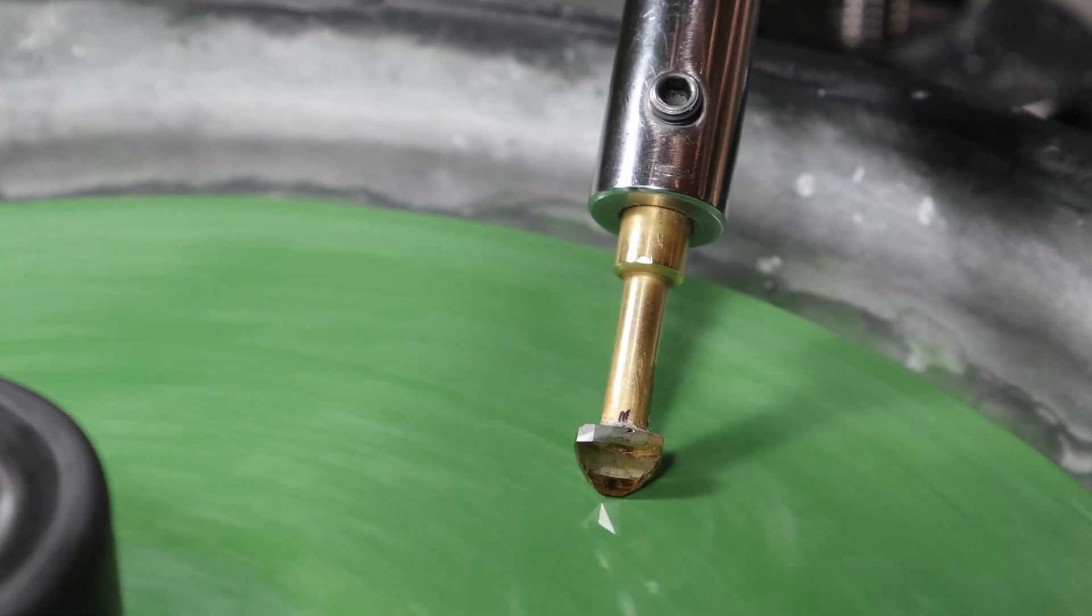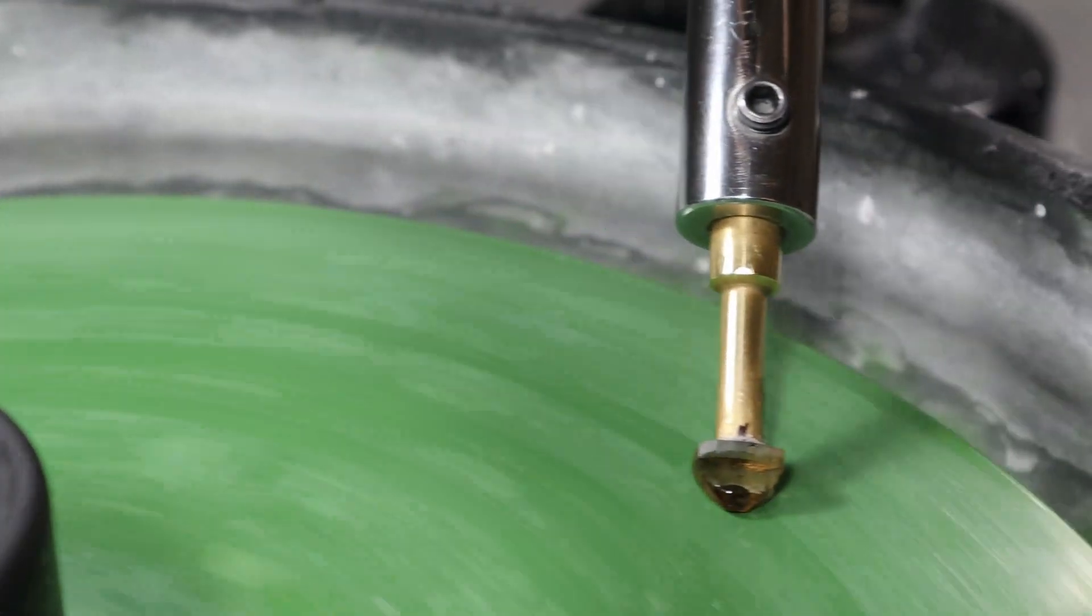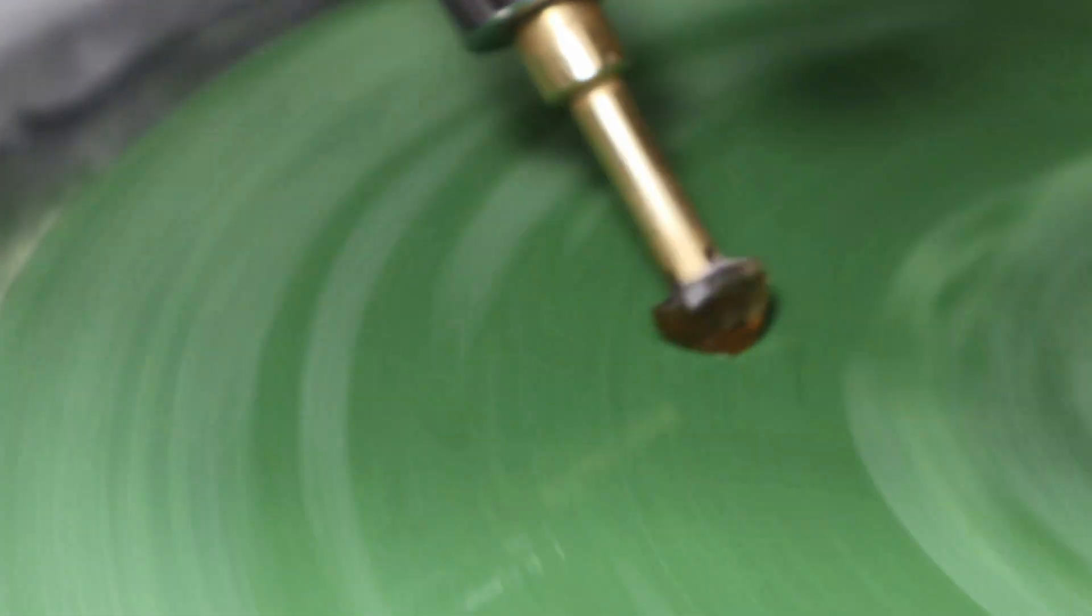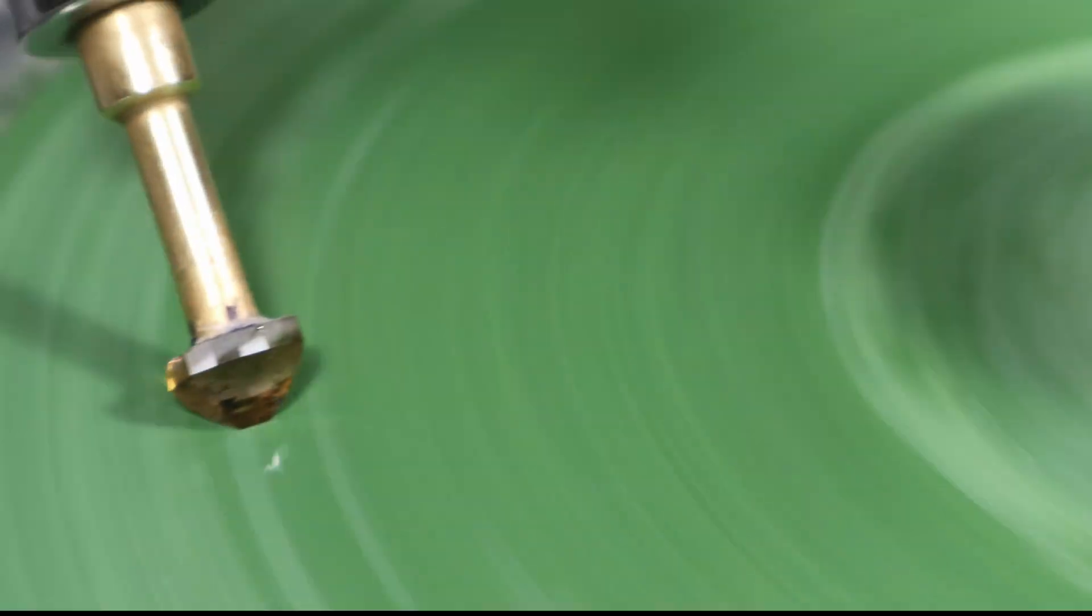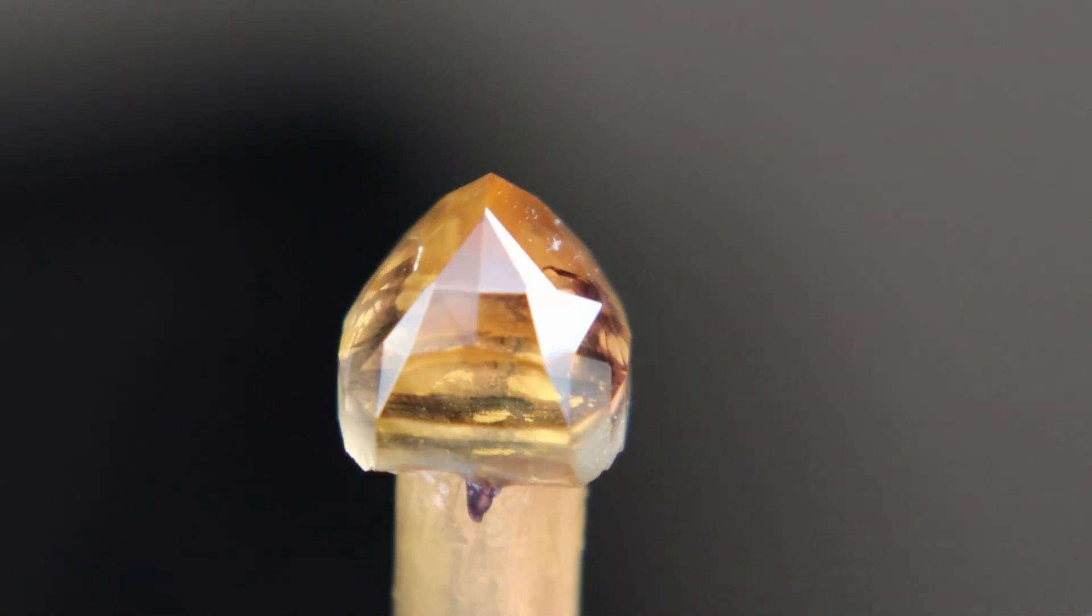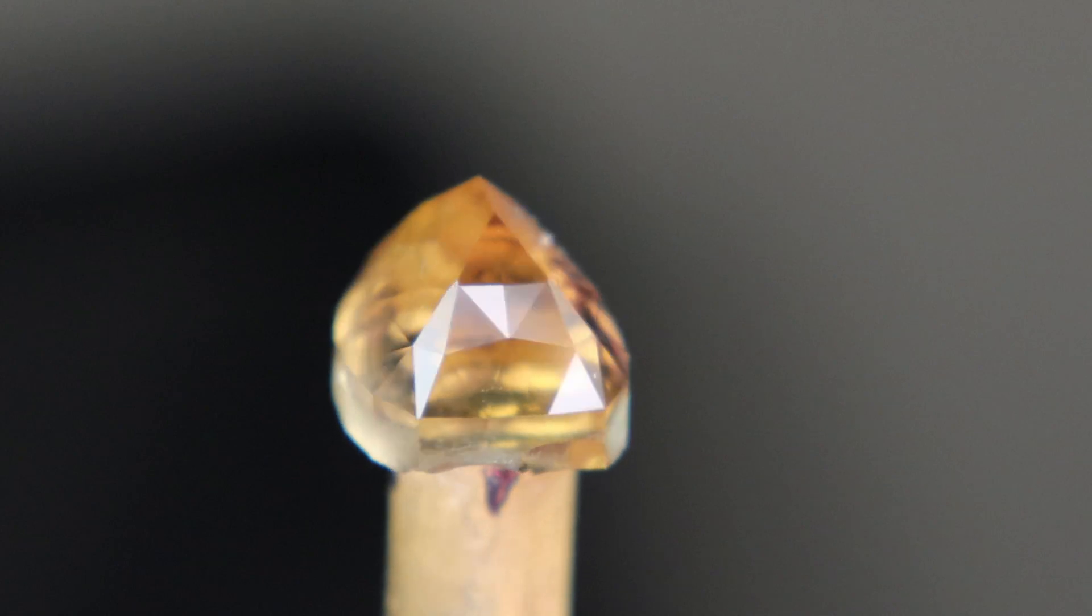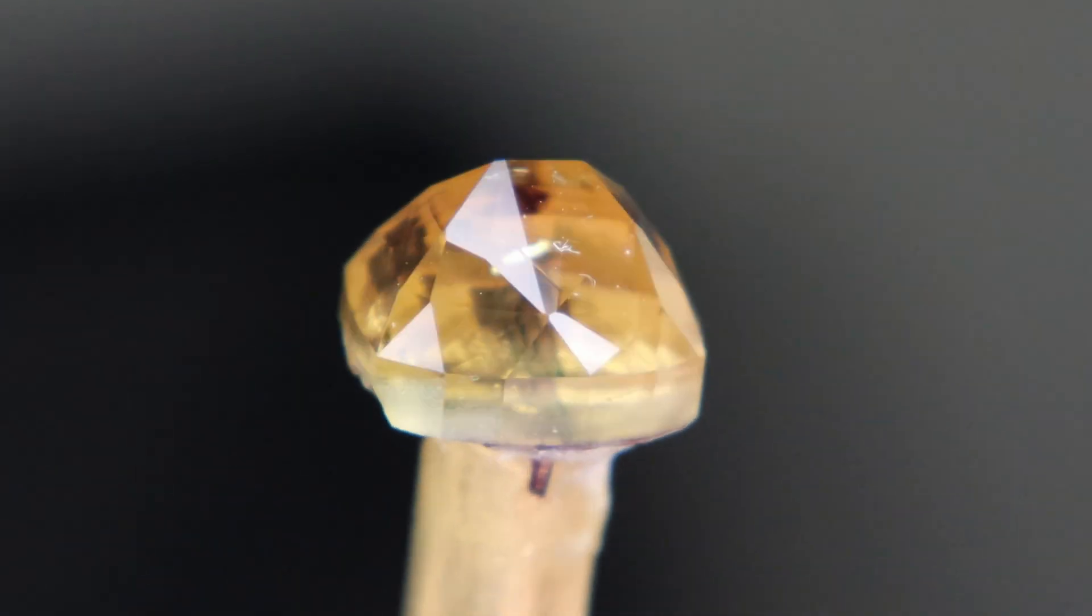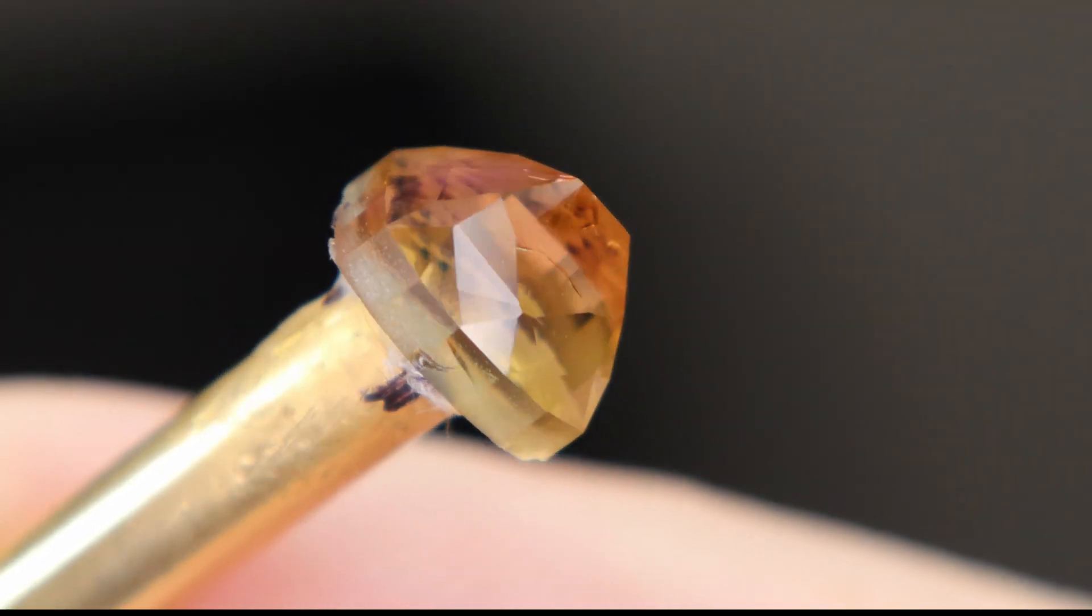For this tanzanite the final polish is given using a Greenway lap which is a chrome oxide embedded polishing lap. I use soft pressure at low speed while the lap is moistened to get a really nice polish. Here the pavilion side's polish is finished. There are a few fractures still in the piece but they are fairly minor and I think that they wouldn't be worth cutting out with how far they still go into the stone.